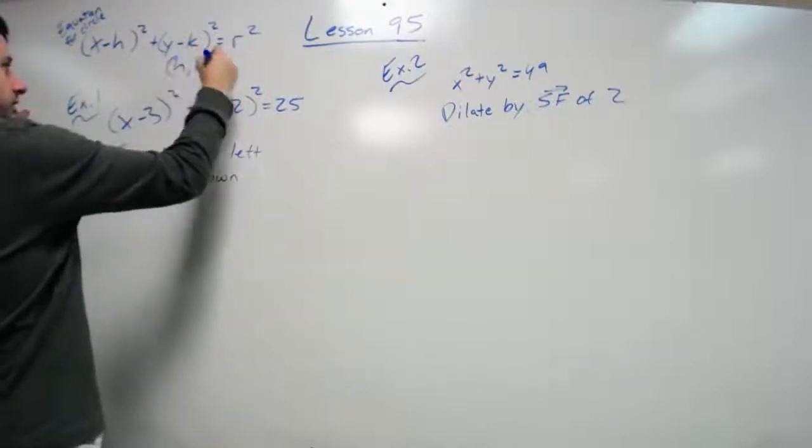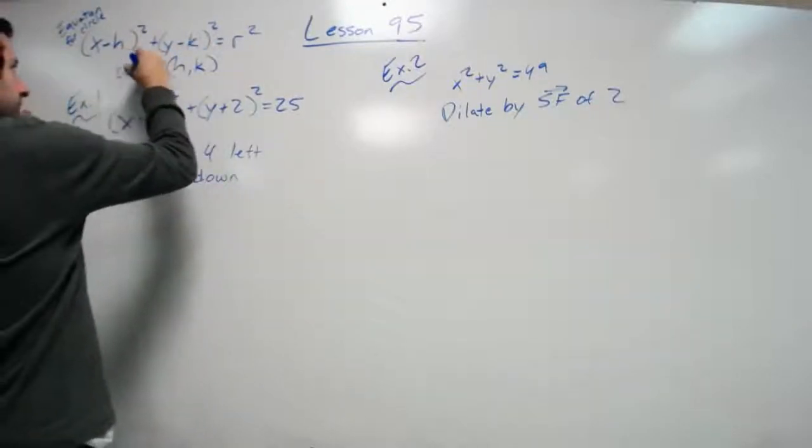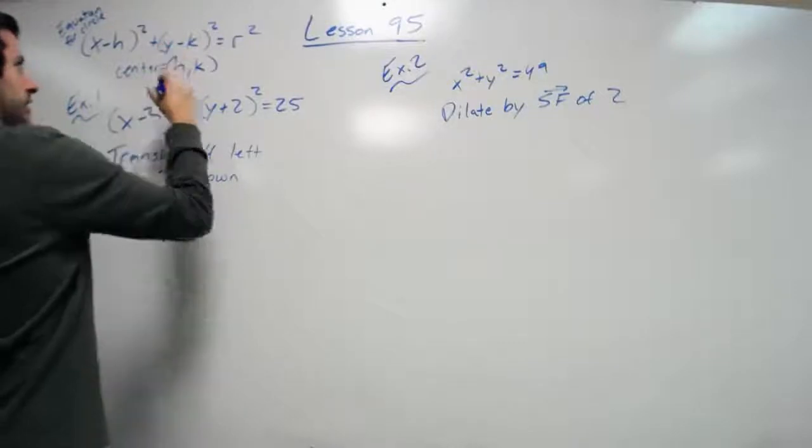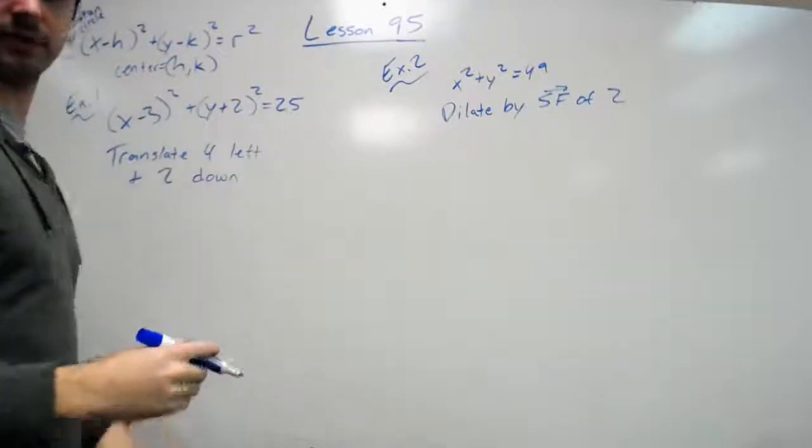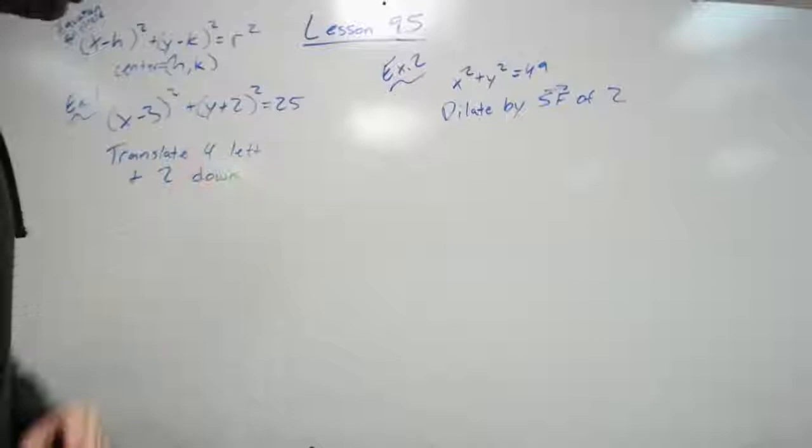h and k are your center, and r is your radius, your distance from the center to an end point on the circle.